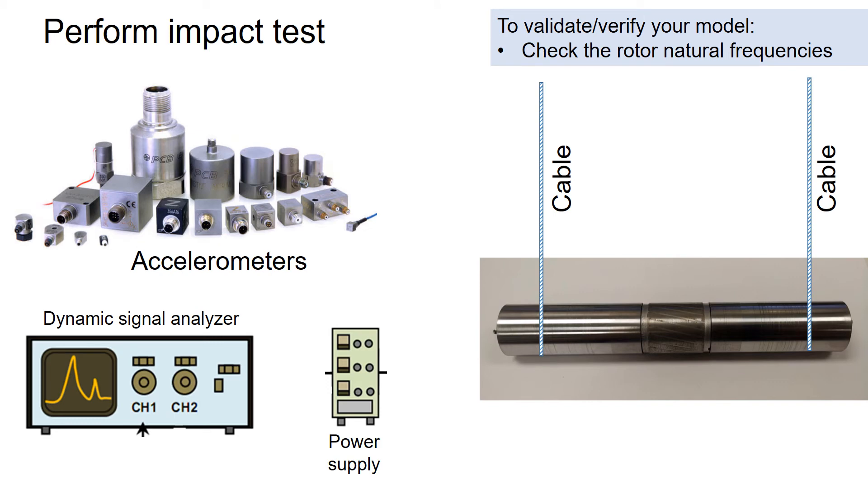First thing you should do is hang the rotor using a cable or rope. Then you attach two accelerometers on the shaft. The reason you are putting two accelerometers is to measure the mode shapes. If you just need to measure the natural frequencies, you just need one accelerometer.